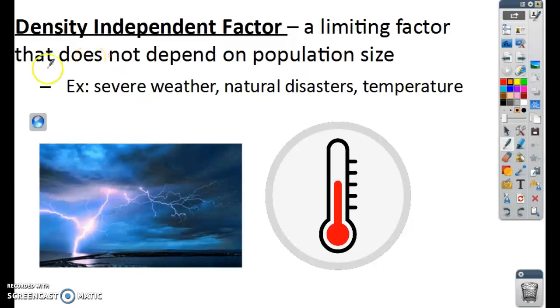Density-independent factor is a limiting factor that doesn't depend on population size. It's independent of the density or of the population. So severe weather, natural disasters, temperature. Let's think about severe weather. Perhaps there's a tornado. Well, it doesn't matter if there are 100 sheep in a pasture or if there's five sheep in a pasture. That tornado is going to affect those sheep the same. If the tornado goes by them, we're going to have a sheep tornado. Tornadoes don't pick, they don't decide which sheep they're going to kill, or this is a bigger population, so we're going to affect it more.